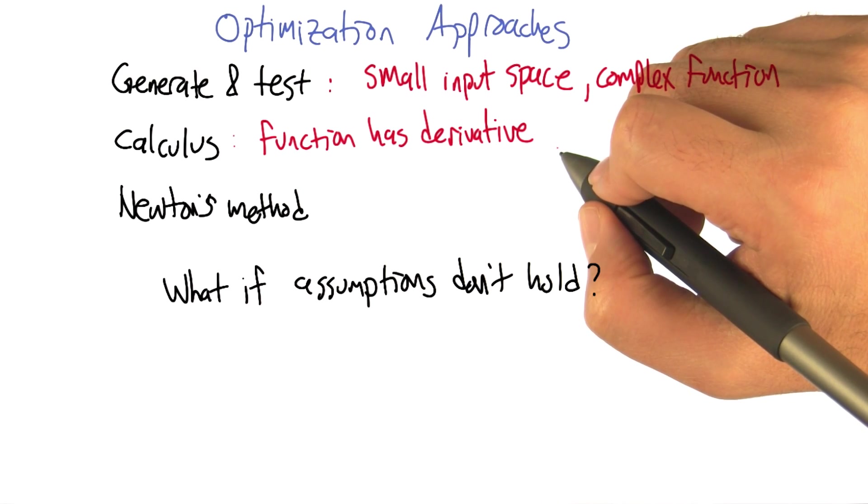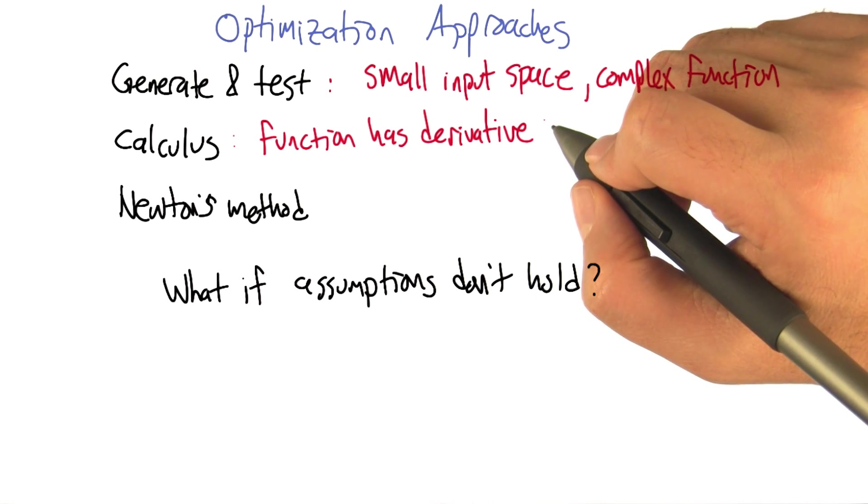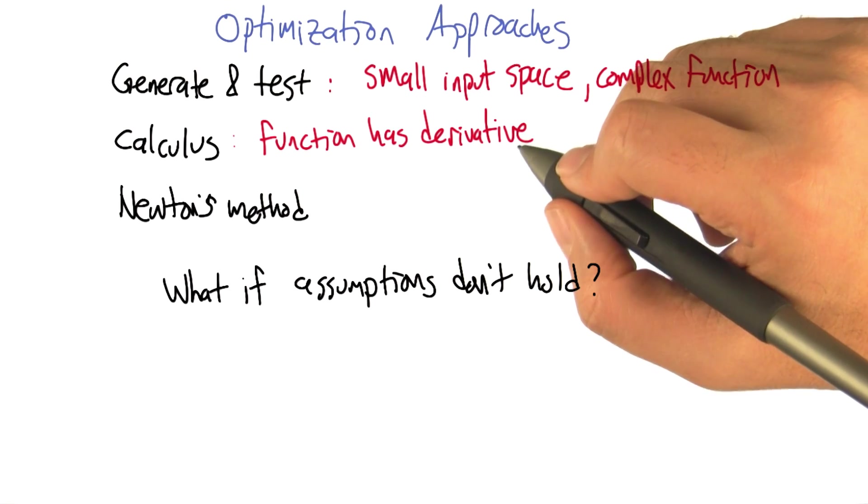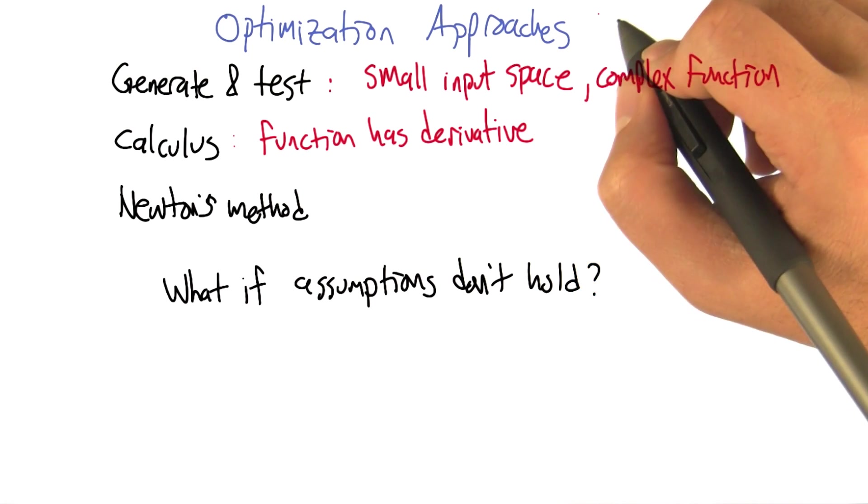Right, or if the inputs are discrete. Right, like in the first example. So it might not actually give us any feedback. The derivative is, we're not moving in a smooth continuous space.